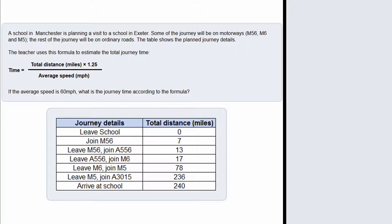We are also given a formula that is used to estimate the total journey time. The question asks us: if the average speed is 60 miles per hour, what is the journey time according to the formula?